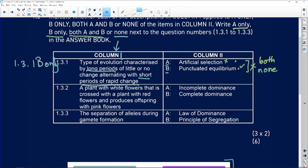You don't write anything else. You write what the instruction told you to write. A plant with white flowers that is crossed with a plant with red flowers and produces offspring with pink flowers. Is that incomplete dominance or complete dominance?